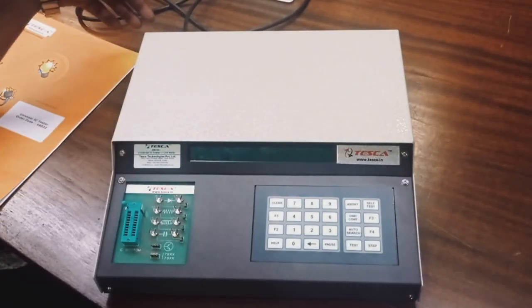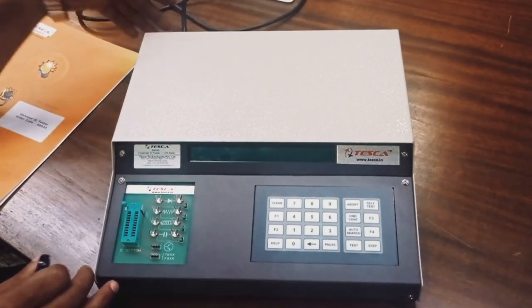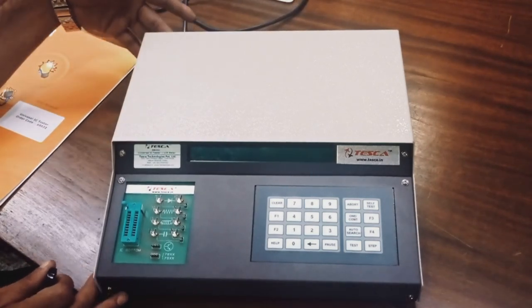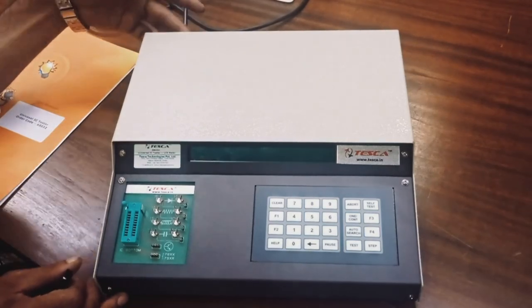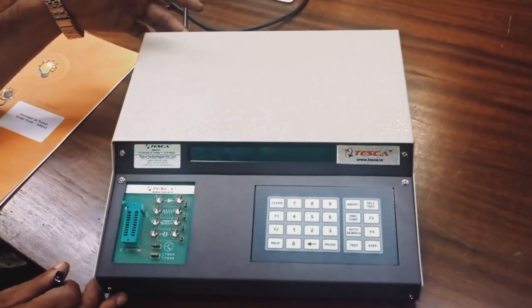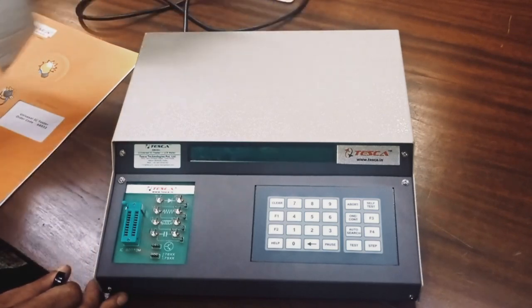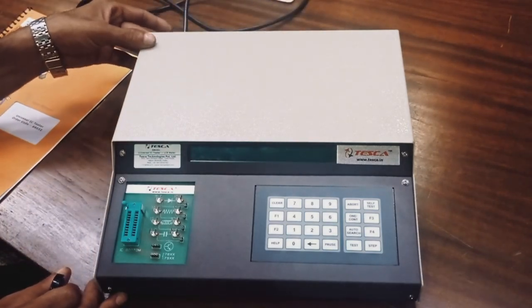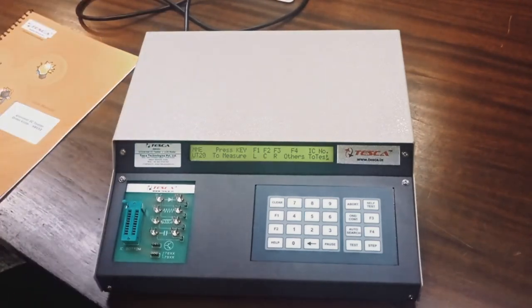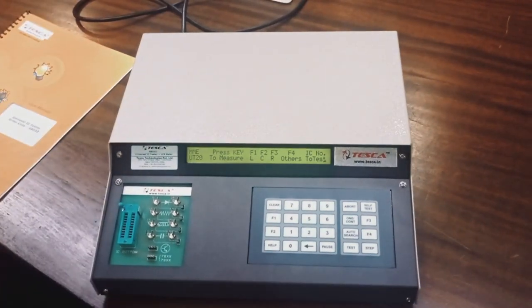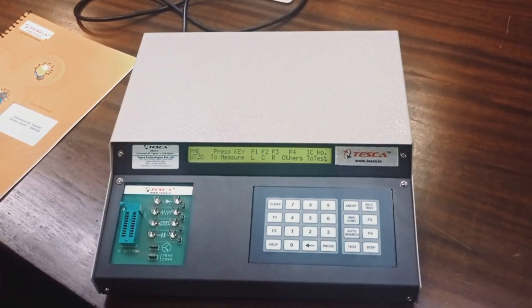In this kit we have provided main slot and main socket on the back side of the kit, one power on/off switch, one ZIF socket, and one RS232 communication socket with the PC. Now we switch on the kit. This is our 68032 Universal IC Tester kit.